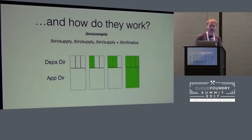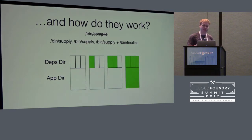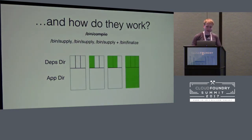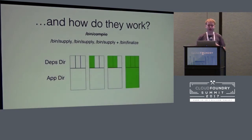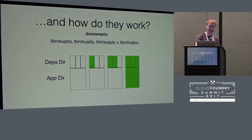Let's take a deeper dive into how that works. Each bin supply script writes to a special sandbox directory. The bin finalize script is then allowed to write to the application directory and make any necessary adjustments there, and then it makes those sandbox directories accessible to the application. The bin supply scripts also have access to the previous sandbox directories, so they can make use of any dependencies there during staging.